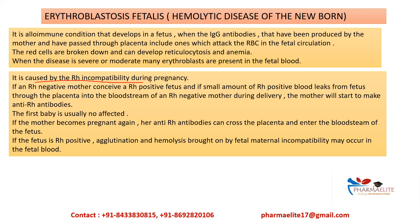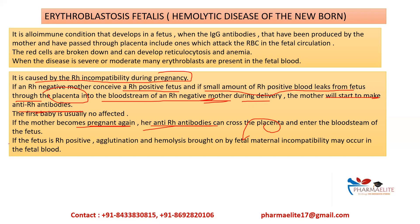In summary: erythroblastosis fetalis is caused by RH incompatibility during pregnancy. If a RH negative mother conceives a RH positive fetus and a small amount of RH positive blood leaks through the placenta into the mother's bloodstream during delivery, the mother starts making anti-RH antibodies. The first baby is usually not affected. If the mother becomes pregnant again, her anti-RH antibodies can cross the placenta; if the fetus is again RH positive, agglutination and hemolysis will occur in the fetal blood.